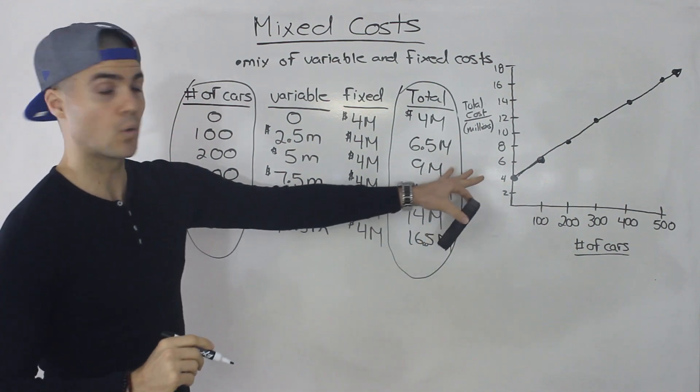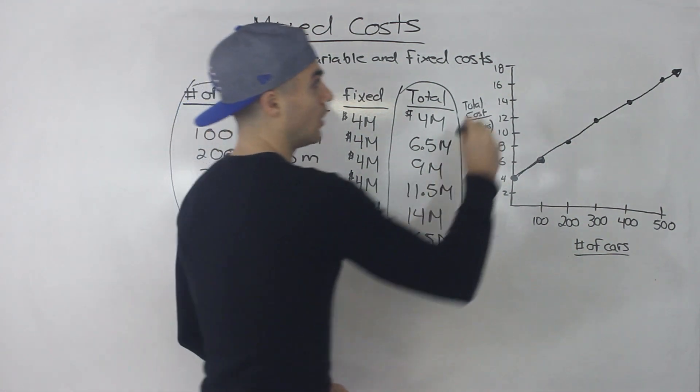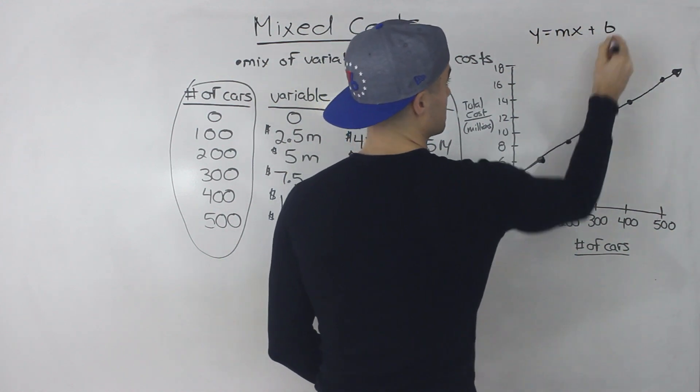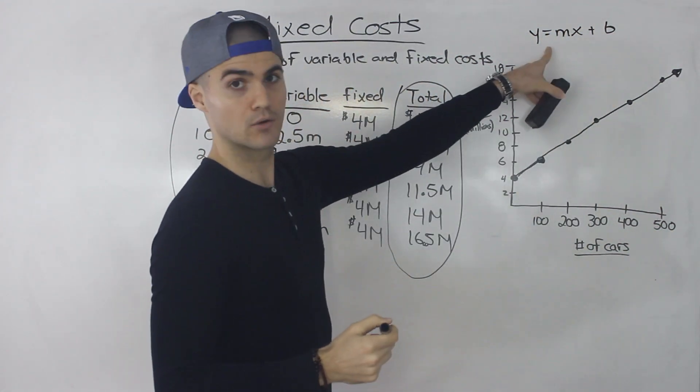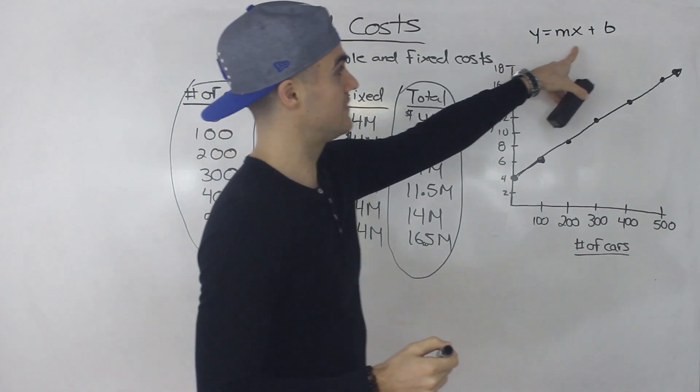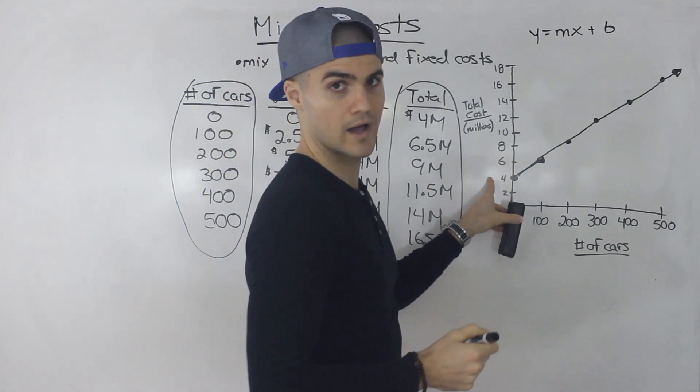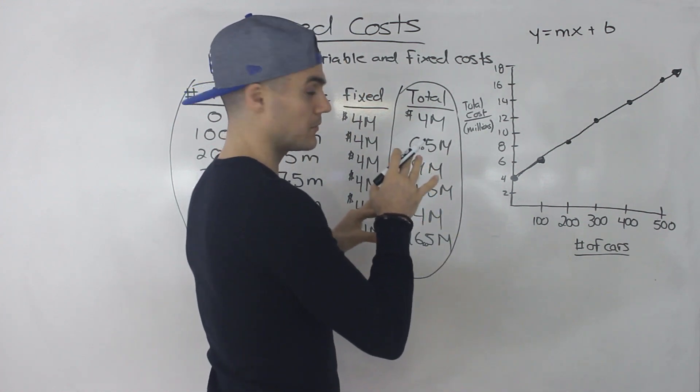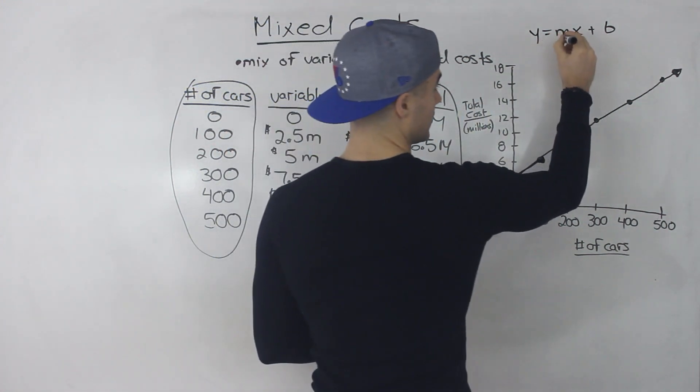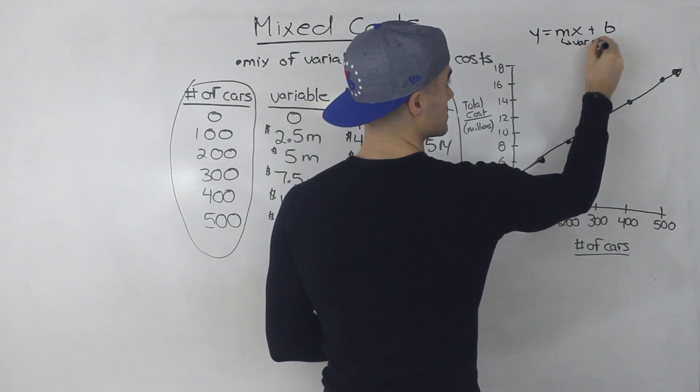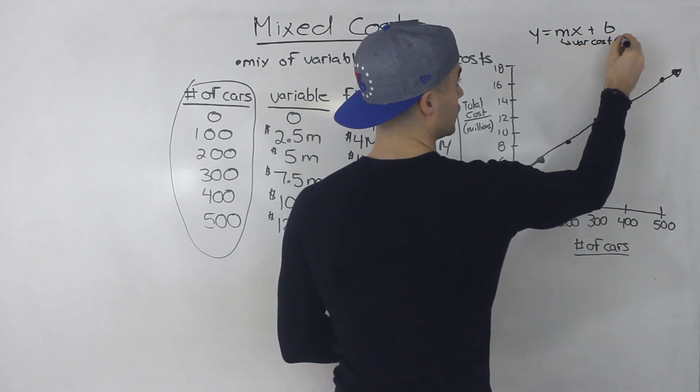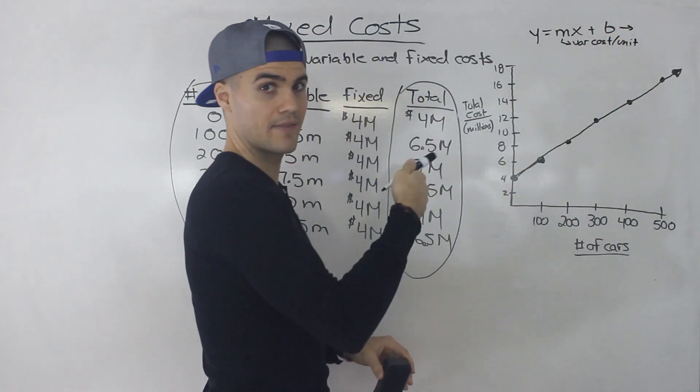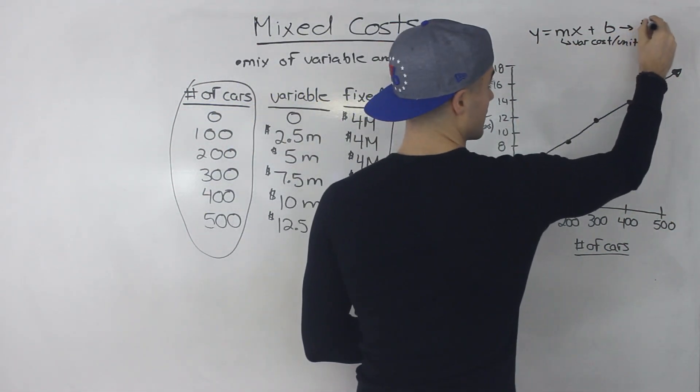So that's how the graph is going to look. Now, what if we were to make an equation for this? Well, if you remember the equation of a line, it's just generally y equals mx plus b. And this m here, it represents the slope. And this b value represents the y-intercept. So when we're talking about costs, basically this m here, it's going to represent the variable costs per unit. And then the b value is going to represent the fixed costs.